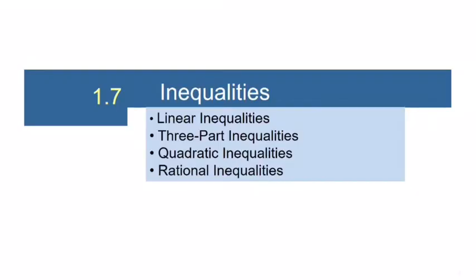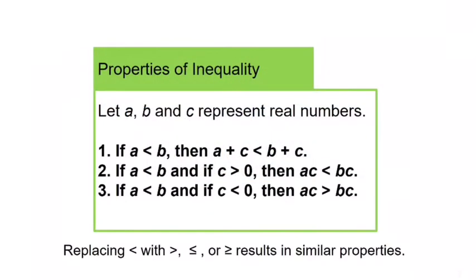So let's get started. First of all, let's look at the properties of inequalities. Let A, B, and C represent real numbers. This first one says that if A is less than B, then A plus C is less than B plus C. In other words, you can add the same thing to both sides without making the inequality false — just like with equations.